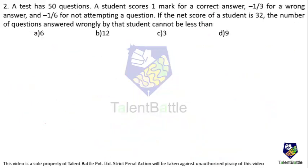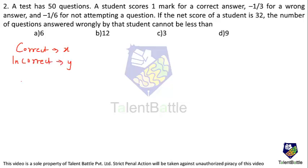Let's check the next question. A test has 50 questions. A student scores 1 mark for a correct answer, minus 1/3 for a wrong answer, and minus 1/6 for not attempting a question. If the net score of a student is 32, the number of questions answered wrongly by that student cannot be less than? Let's form equations. Let number of correct questions be x, incorrect questions be y, and not attempted questions be z.